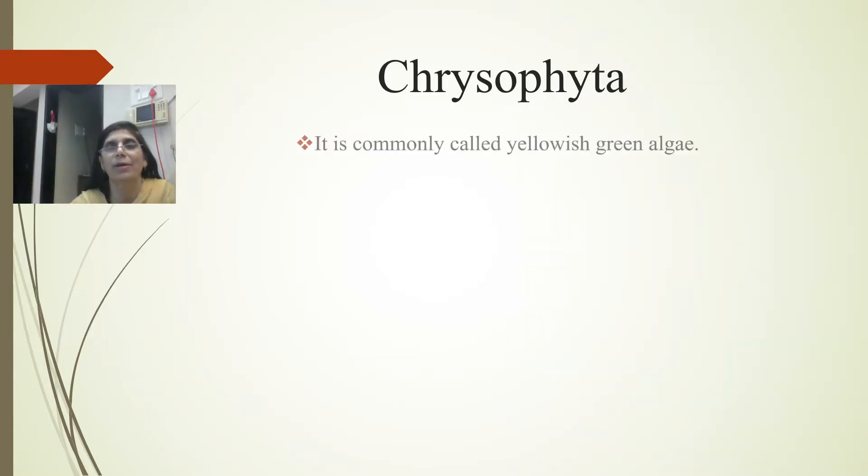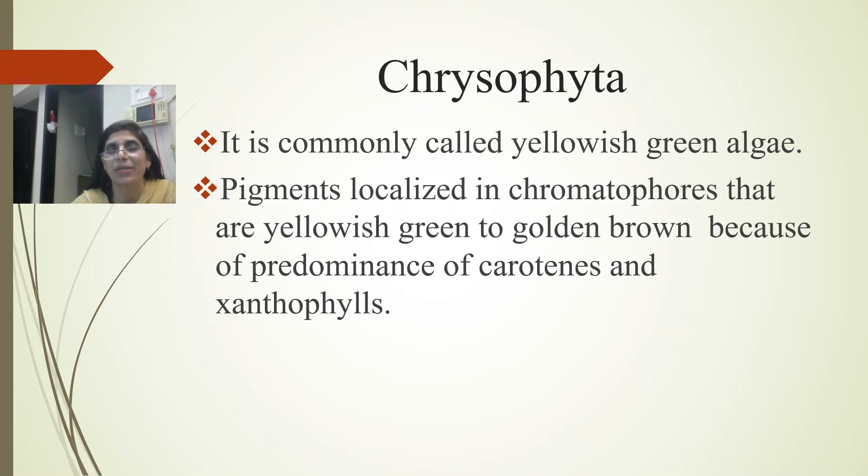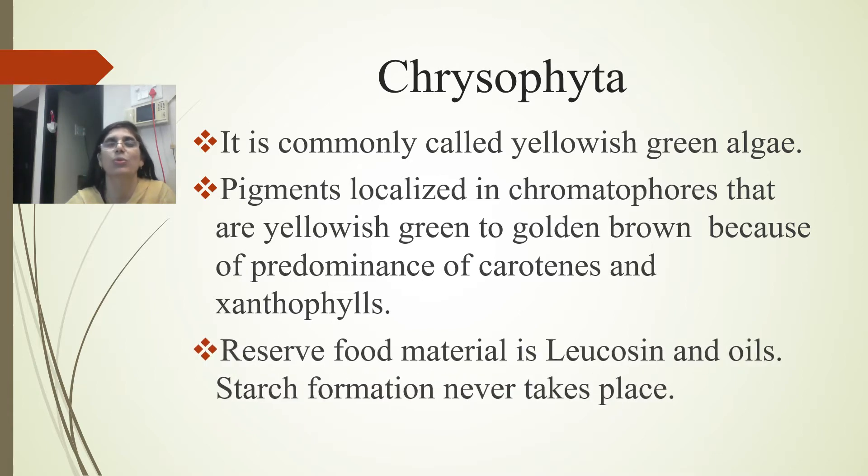Chrysophyta is commonly called yellowish-green algae. Pigments are localized in chromatophores that are yellowish-green to golden brown because of predominance of carotene and xanthophylls. The reserve food material is leucosin and oils; starch formation never takes place.